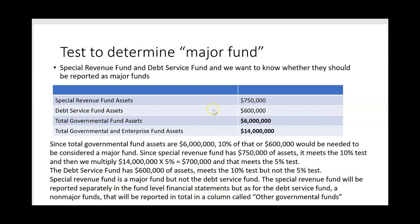The debt service fund has $600,000 — it barely passes the 10% test. But it does not meet the 5% test: it would need assets greater than $700,000, and it only has $600,000. So the debt service fund, even though it met the 10% test, failed the 5% test. It will be a non-major fund, reported in total in a column called 'other governmental funds' — no separate reporting for the debt service fund.